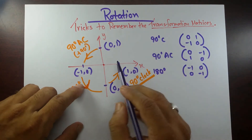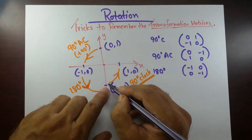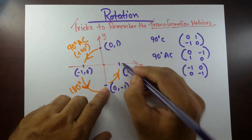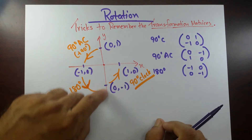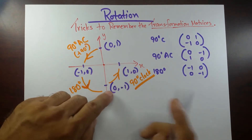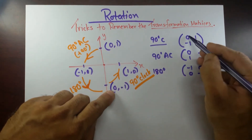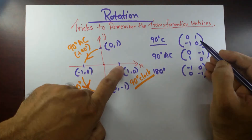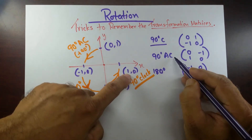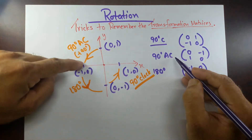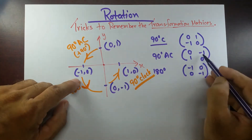Now see how you can relate that. For 90 degree clockwise, the arrow shows from the right unit to the bottom unit. So go from those coordinates: 0, minus 1 — and 1, 0. That gives 90 degree clockwise as: 0, minus 1, 1, 0. And for 90 degree anti-clockwise, the arrow shows from the right unit to the top unit: 0, 1 and minus 1, 0.